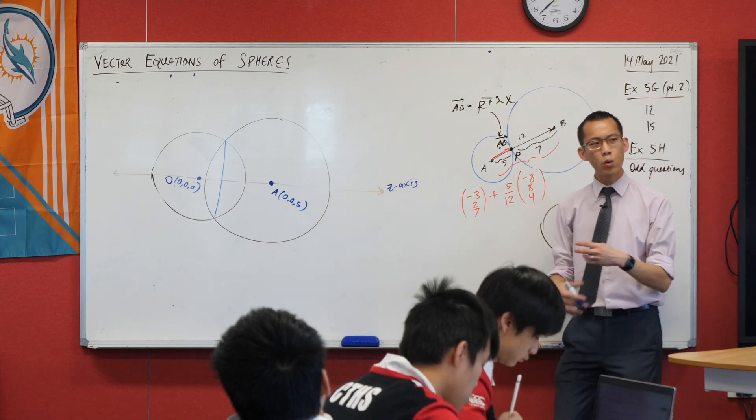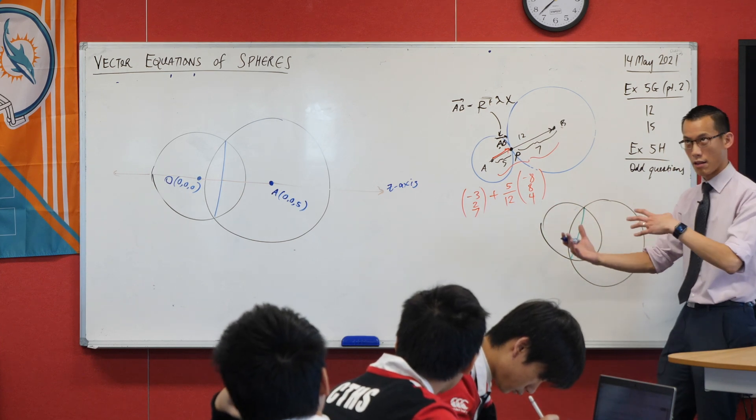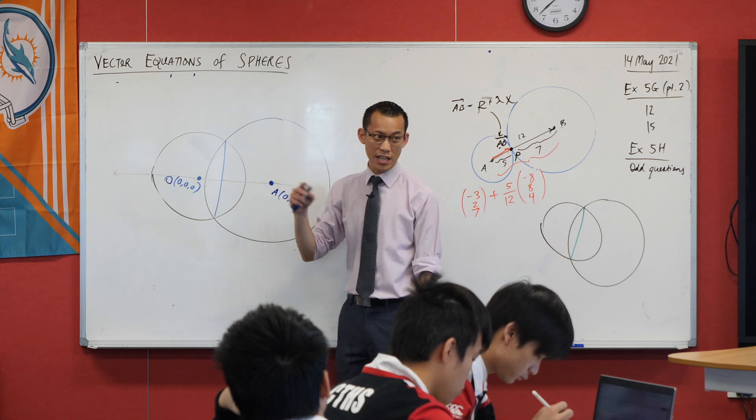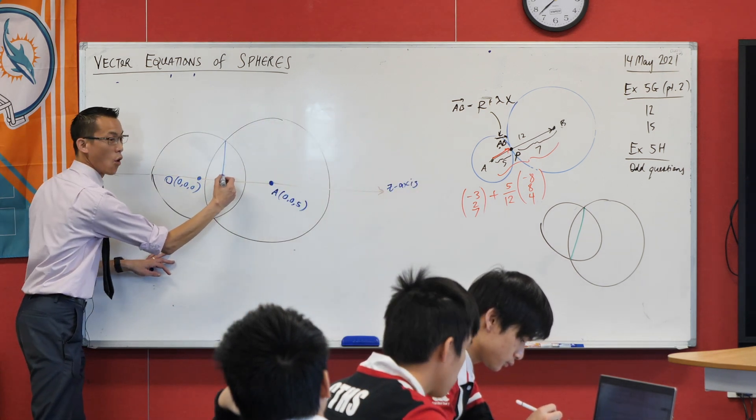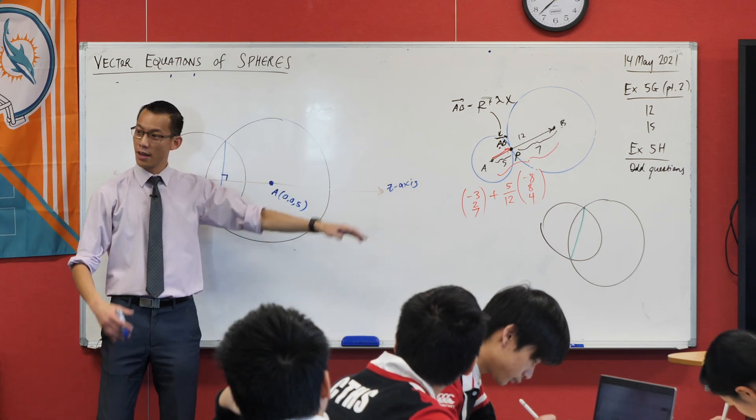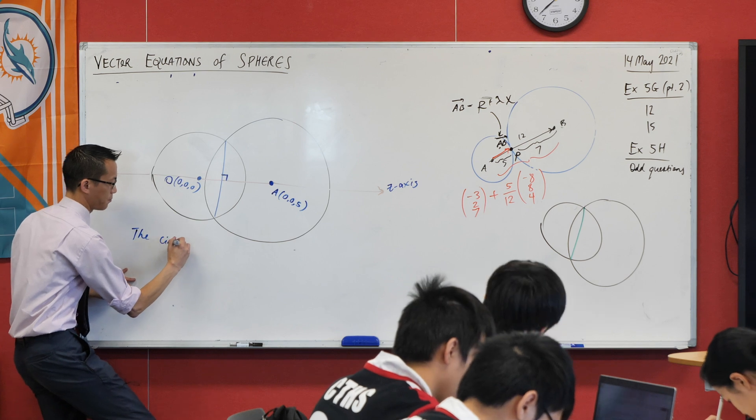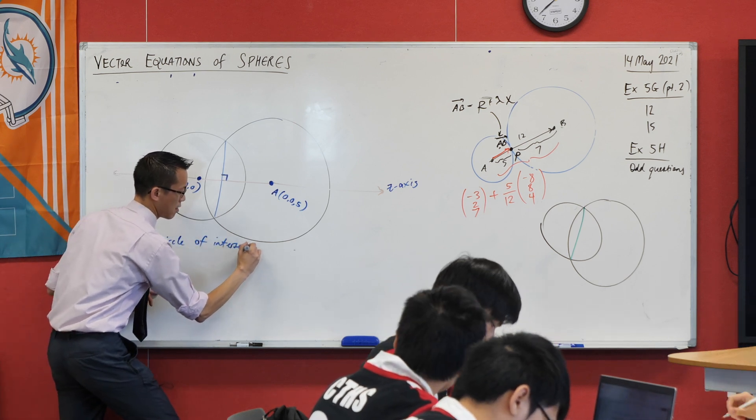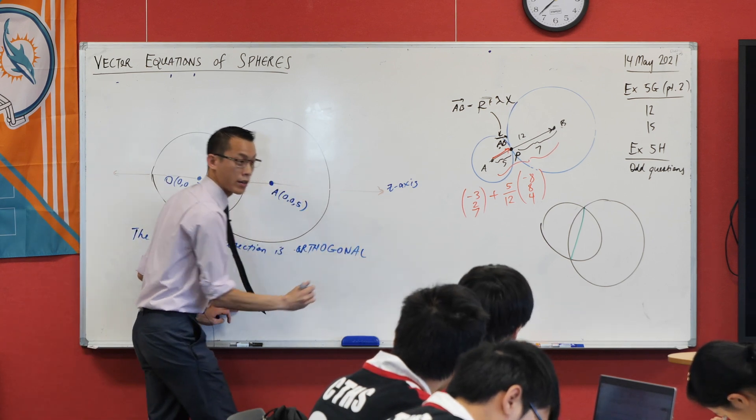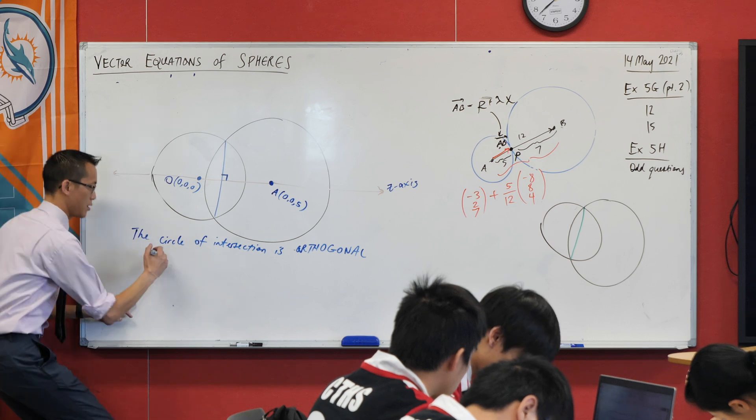I would have used the word perpendicular if I were in two dimensions with an interval and a line. This actually represents a circle. So instead of saying it's perpendicular, I would say it's orthogonal. This circle of intersection is orthogonal to the z axis.